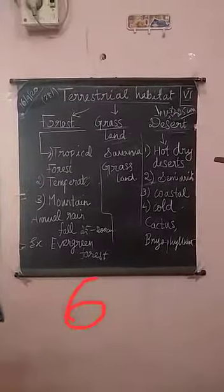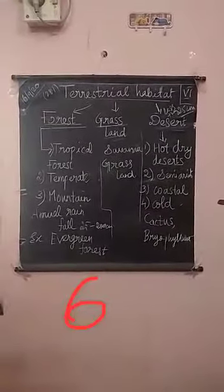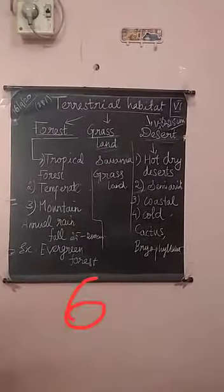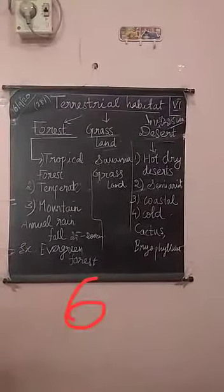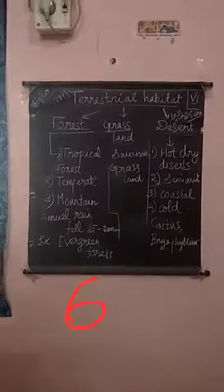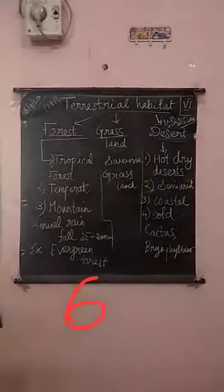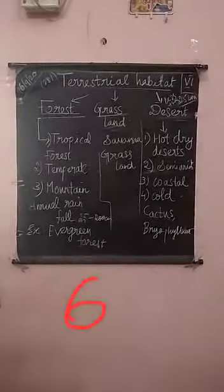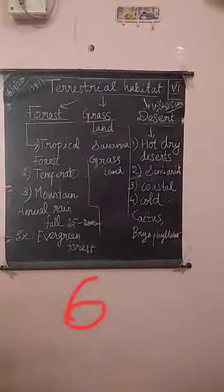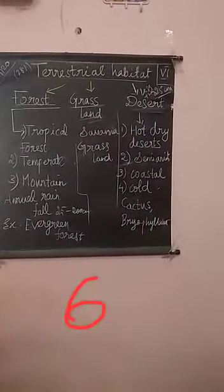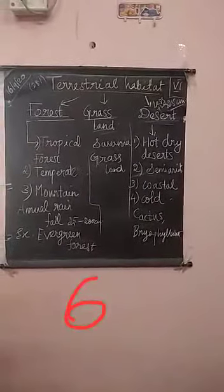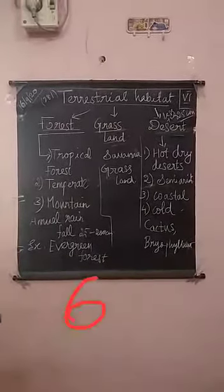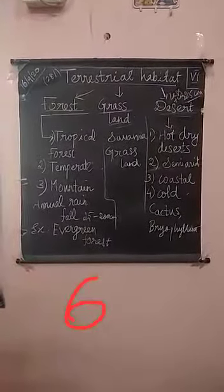The types of desert are: hot dry deserts, semi-arid deserts, coastal deserts, and cold deserts. Examples for desert habitats are cactus and pyophyllum. This is about terrestrial habitat — it is classified into three: forest, grass, and desert. Terrestrial habitat means areas covered by land, and man-made areas like cities and streets also come under terrestrial habitat.